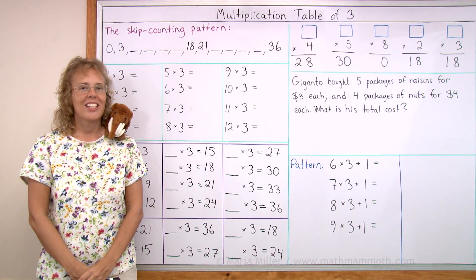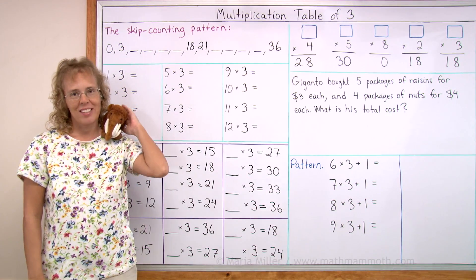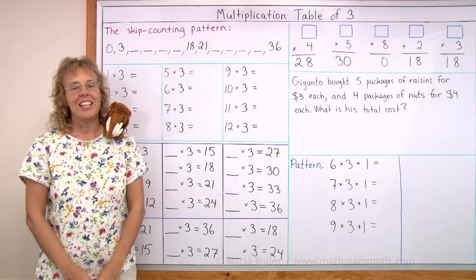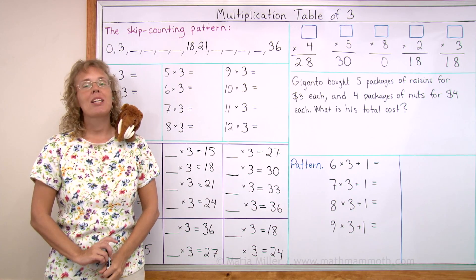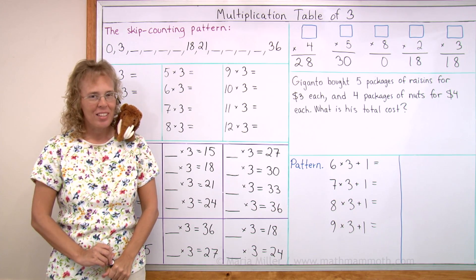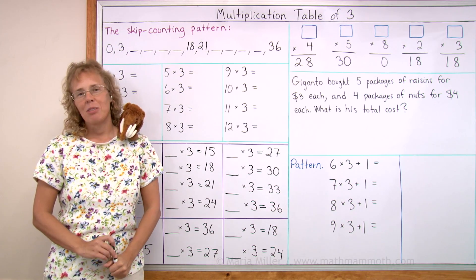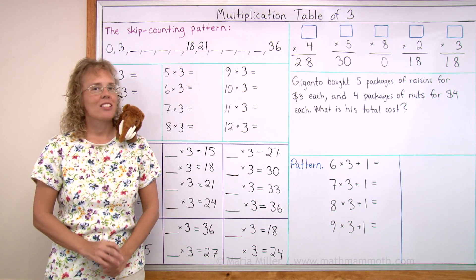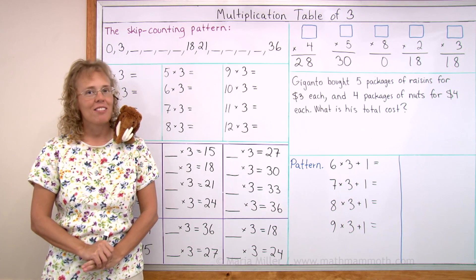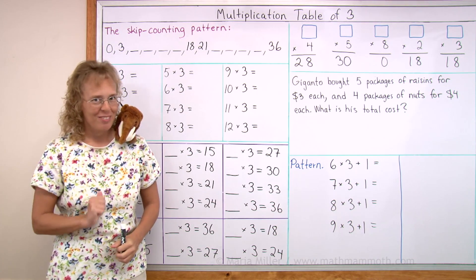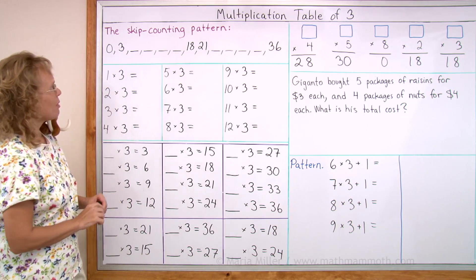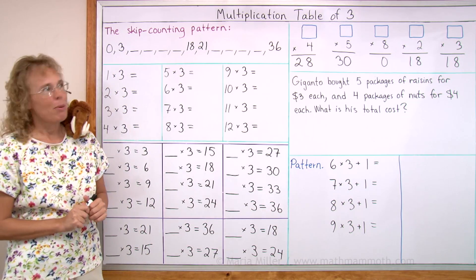Hello, my name is Maria and this is Matthew, my mascot. In this lesson we are studying the multiplication table of 3. And that one is more difficult than some of the others — it's more difficult than the table of 5. So just work hard, okay? We'll start with the skip counting pattern.